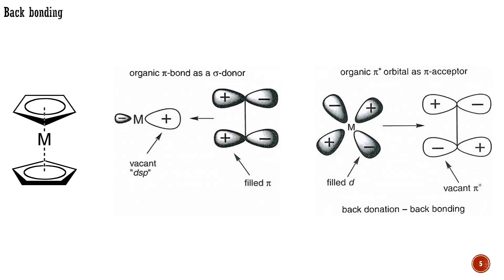Therefore, the electron density on the metal, and hence its reactivity, can be modulated by varying the ligands around the metal. This offers a major method for fine-tuning the reactivity of organometallic reagents.